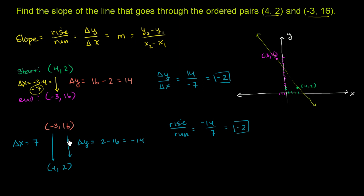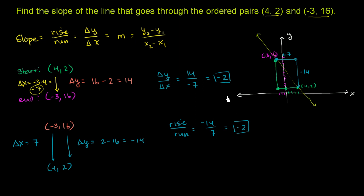To visualize our changes: when we started at 4 comma 2 and ended at negative 3 comma 16, our change in x was negative 7 — we moved left by 7 — and our rise was positive 14. That gives 14 over negative 7, or negative 2. When we did it the other way, starting at negative 3 comma 16 and ending at 4 comma 2, our run was positive 7 and our rise was negative 14. Either way, we got the same slope of negative 2.